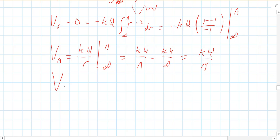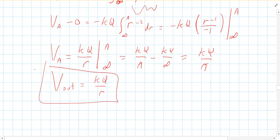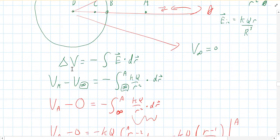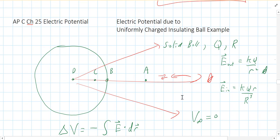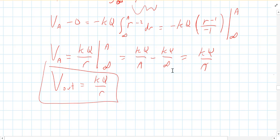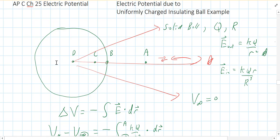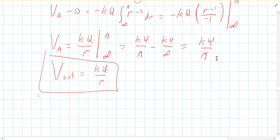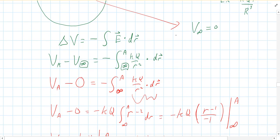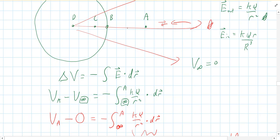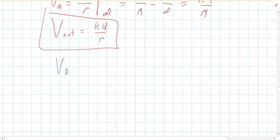The voltage anywhere outside the ball is kq over r — which shouldn't surprise you, because when you're outside the ball it acts like a point charge, and the voltage of a point charge is kq over r. You are free to use that result: if you are outside a symmetric ball of charge, the voltage is just kq over r. At point B, at the surface, you simply plug in big R, giving kq over big R.